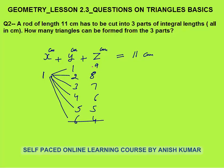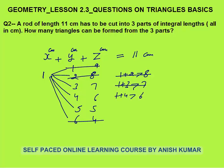Now checking which combinations make a triangle: (1, 1, 9) — no, because 1 plus 1 is not greater than 9. (1, 2, 8) — no. (1, 3, 7) — no, 1 plus 3 is not greater than 6. But (1, 4, 6): checking, 1 plus 4 is not greater than 6 — no. (1, 5, 5): 1 plus 5 equals 6 which is not greater than 5... wait, checking the two smaller sides: 1 plus 5 must be greater than 5. Yes! So (1, 5, 5) makes a triangle. That gives us one triangle.